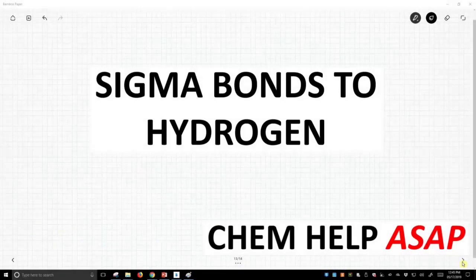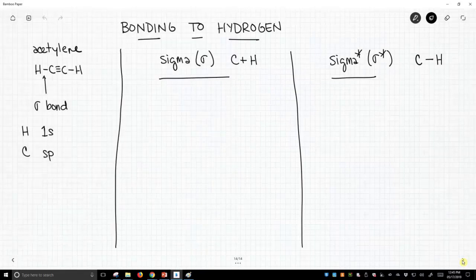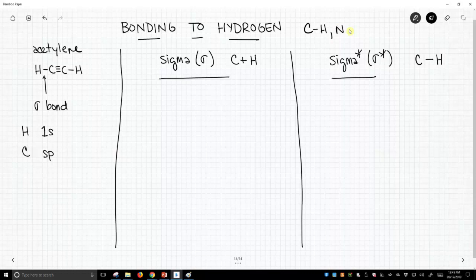Welcome to Chem Help ASAP. We're going to talk about forming sigma bonds to hydrogen, and these bonds to hydrogen could be CHs or NHs or OHs or really any other bond, but for the most part we're going to deal with CHs, NHs, and OHs.